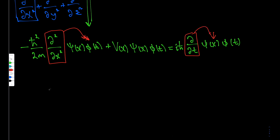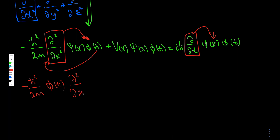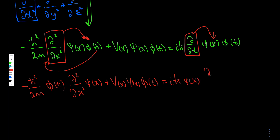Now let's apply the derivatives. We have minus h-bar squared over 2m — we can bring phi(t) in front of the x-derivative, just as we could bring a constant like 5 in front of d/dx of 5x. Then we apply the second derivative to psi, giving psi-double-prime. On the right side we have i·h-bar times psi times the time derivative of phi(t), which is phi-dot.